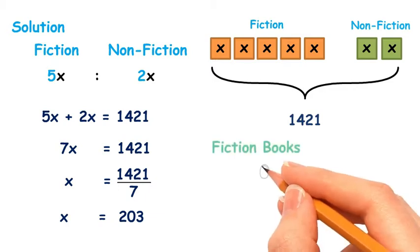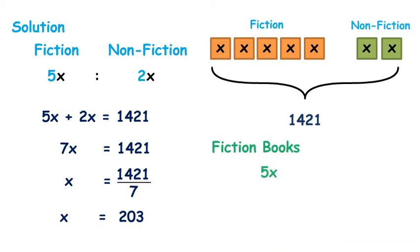Fiction books equals 5x. 5 times 203 equals 1015. There are 1015 fiction books.